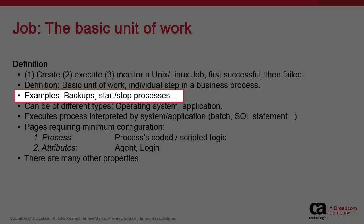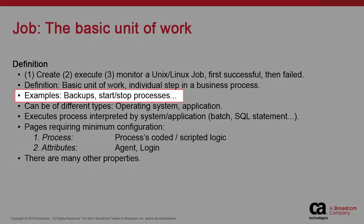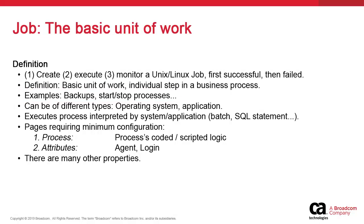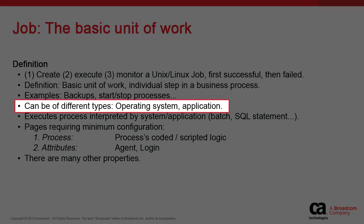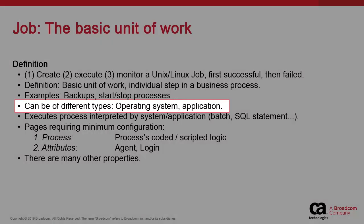An example might be the updating of an application, which requires shutting down, backing up, downloading a file, appending that file, generating reports, and restarting the application. Each of those individual steps are jobs. The job contains the required attributes to trigger a process on an operating system or application.